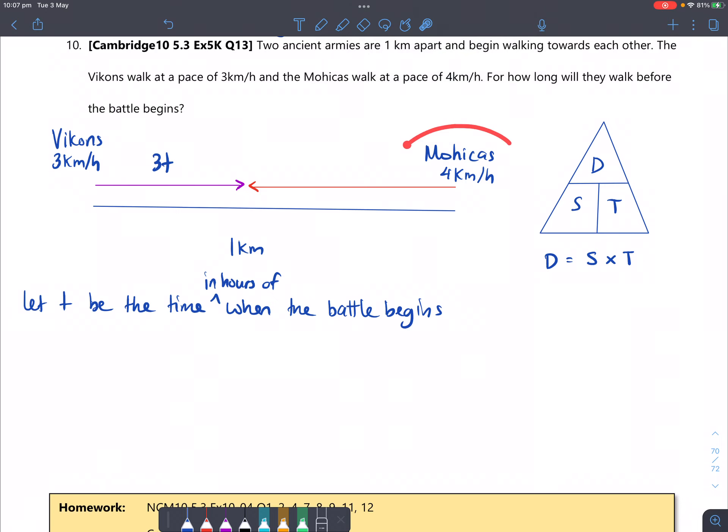Whereas the Mohicas, they will travel 4 times T. So all together, 3T plus 4T, all together, would total this distance of one kilometer.